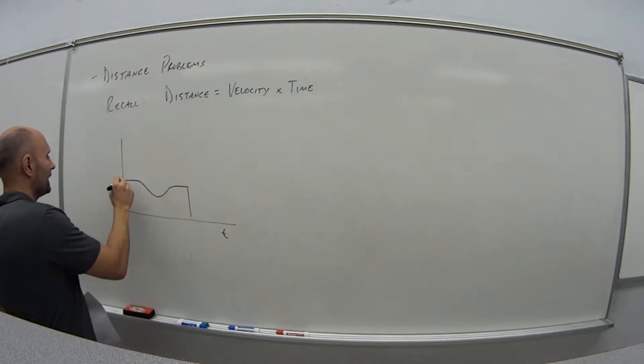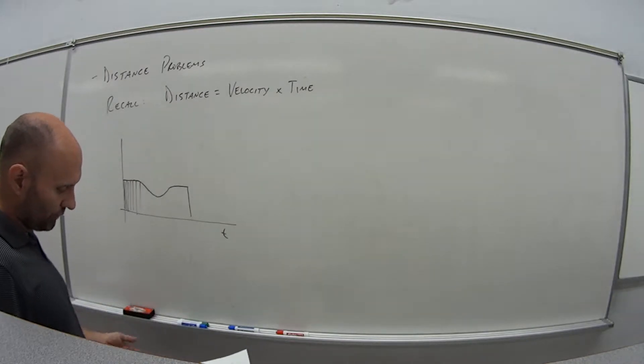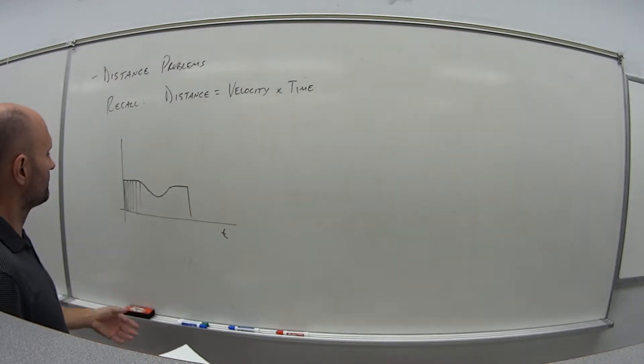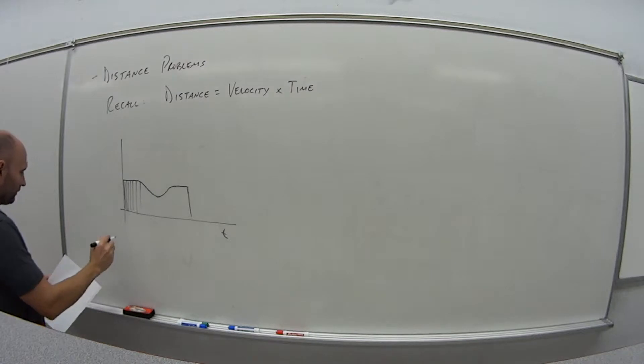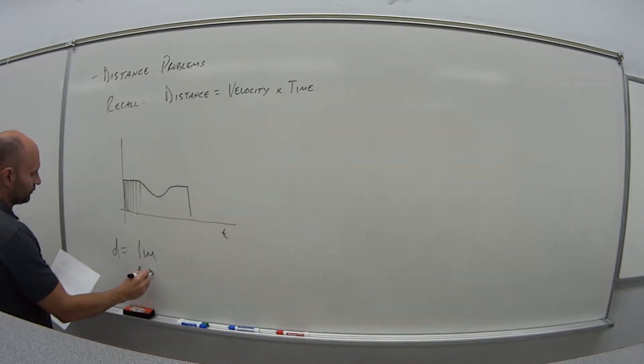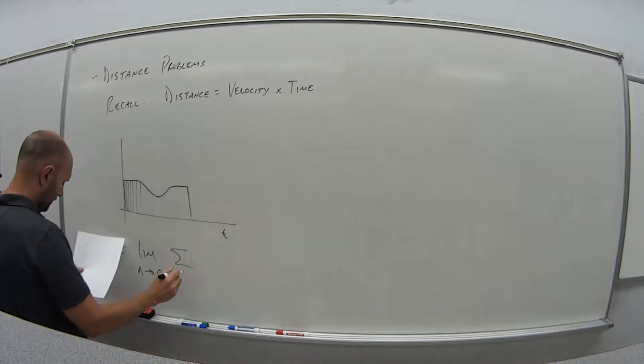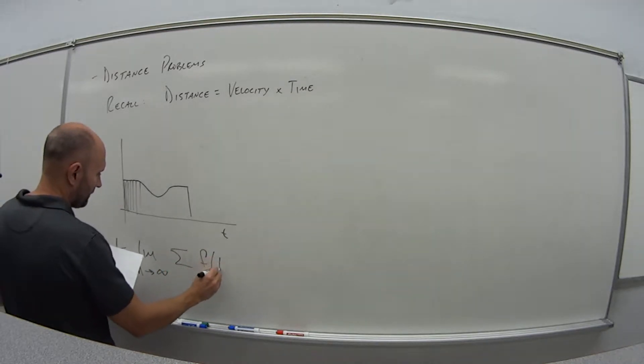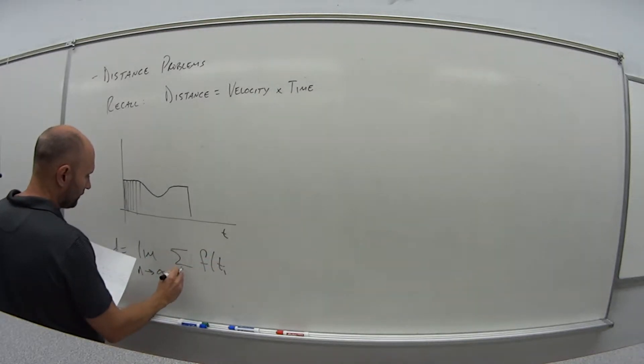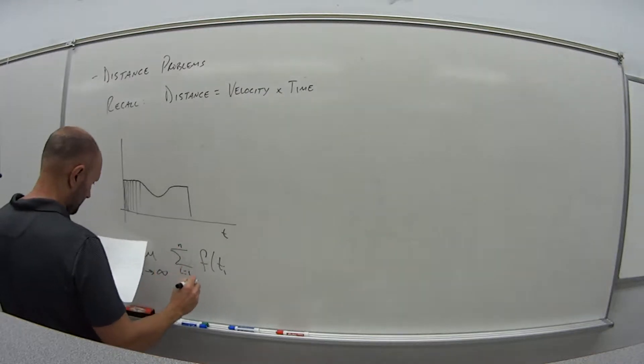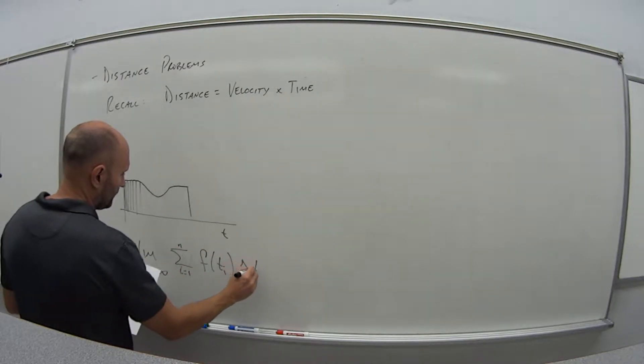But what I could do again is add up the area under this curve, and this will give me the distance that I travel. So we're going to write it in terms of mathematically the distance is the limit as n goes to infinity. The sum of f of ti, so i is going from 1 to n, delta t.